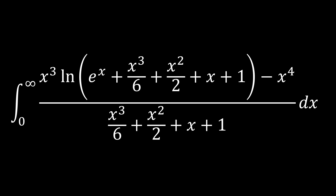First off, we can see a few things about this integral. On the top, you can see this natural log — as x goes to infinity, the e to the x is going to dominate. So it's essentially going to be equal to ln(e^x), which is just x. So it's going to look like x to the fourth over x to the fourth, which is just zero on top. So we can see that it tends pretty rapidly to zero for very large x.